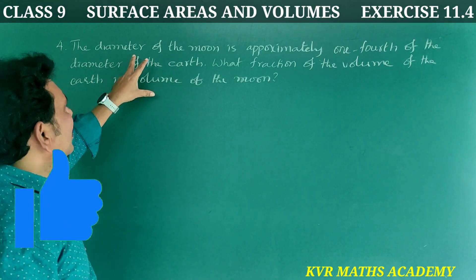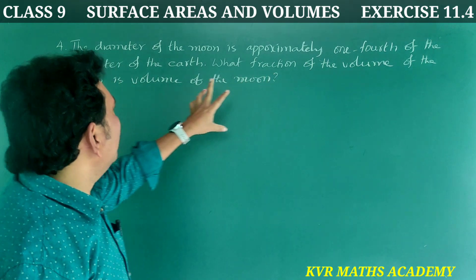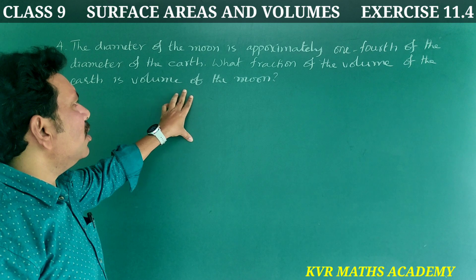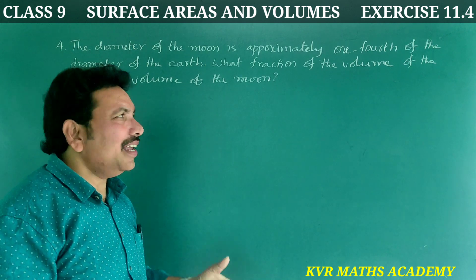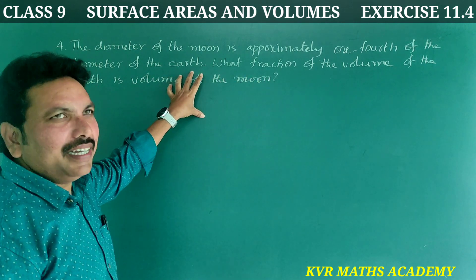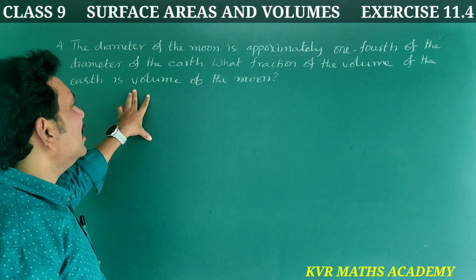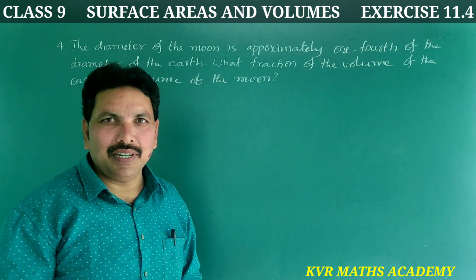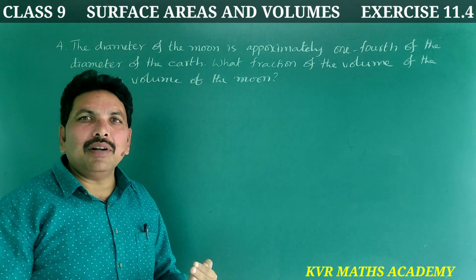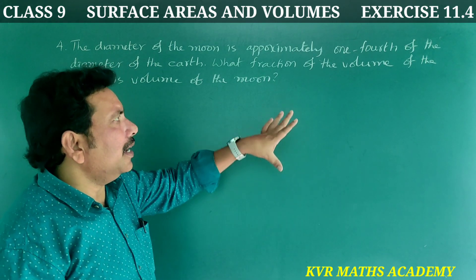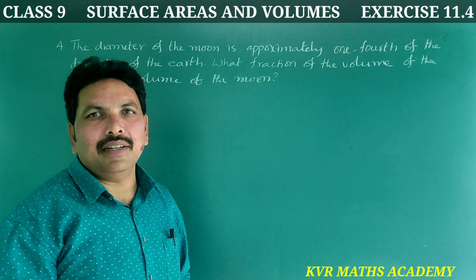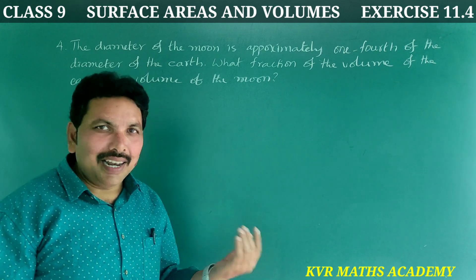Fourth question: The diameter of the moon is approximately one-fourth of the diameter of the earth. What fraction of the volume of the earth is the volume of the moon? Let us find the ratio.